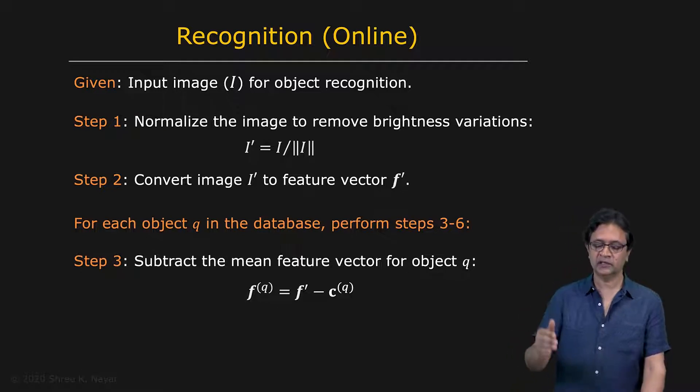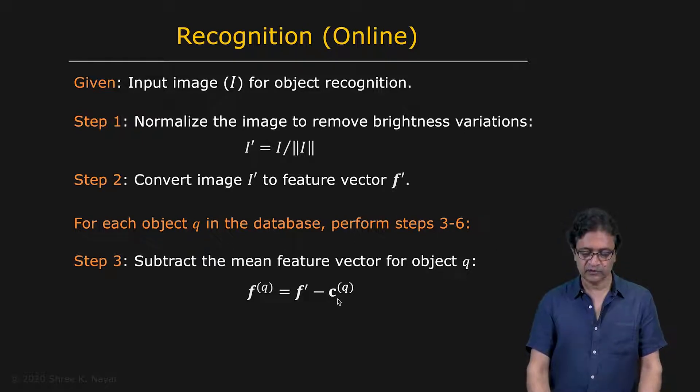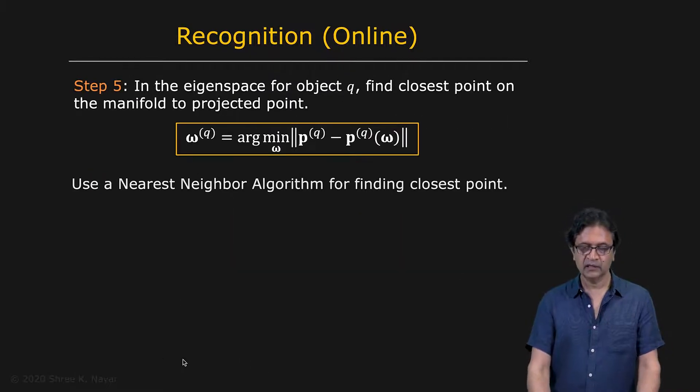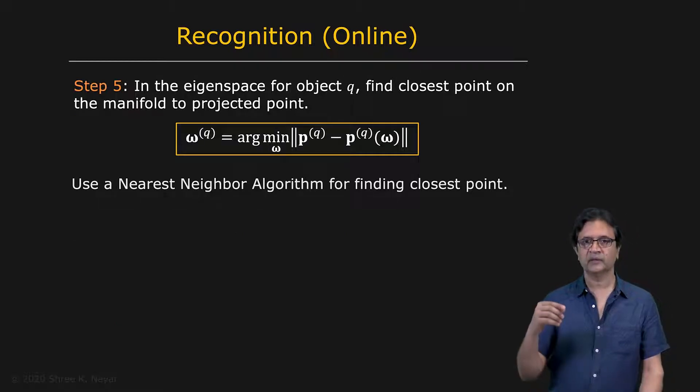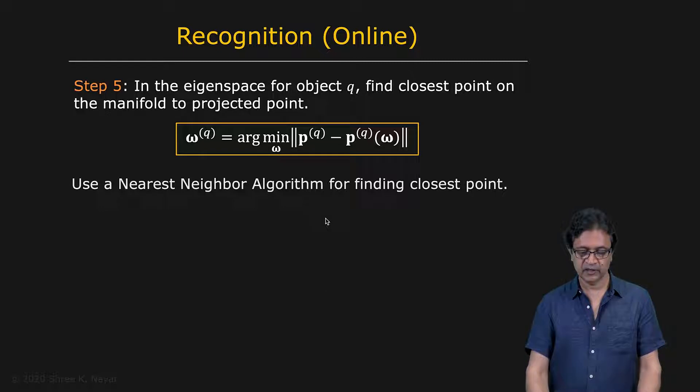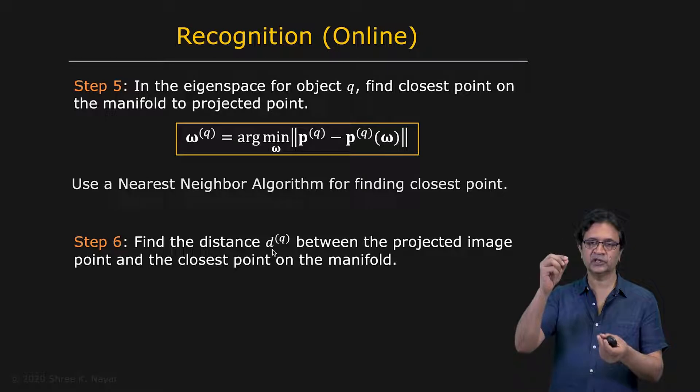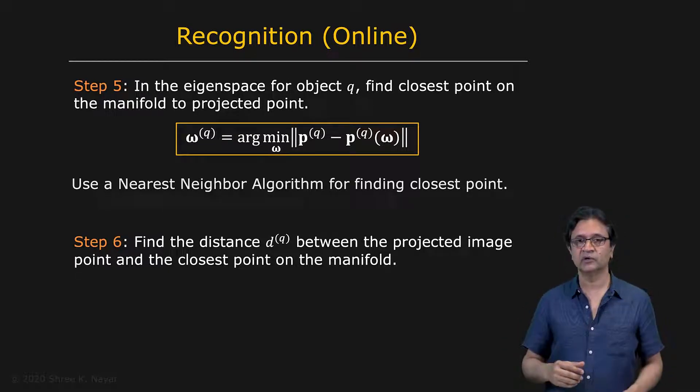And then for each object in our database, we're going to perform the following steps. For object Q, subtract the mean from the input. And so that's mean subtracted projected into the eigenspace for that object. That gives us a point PQ. And then we're going to find the closest manifold point to that input point. So the input point is PQ. And we're going to find the closest point on the manifold of that object using some nearest neighbor algorithm. And we find the distance D from the projection to that closest manifold point.